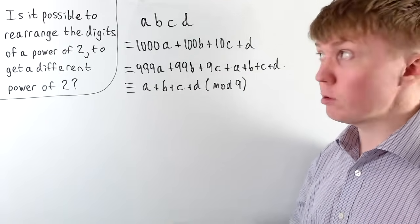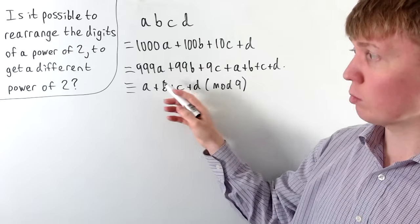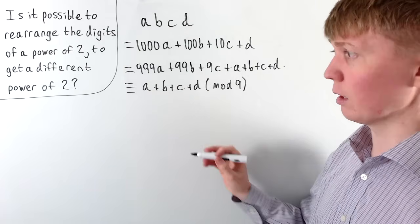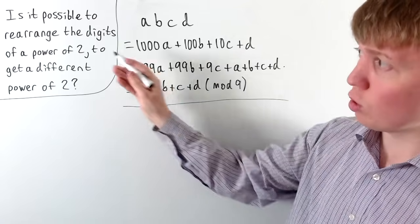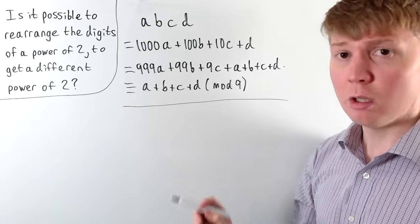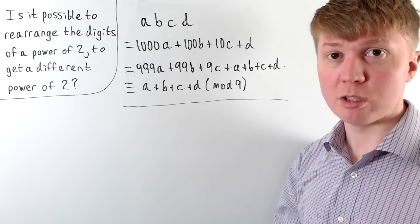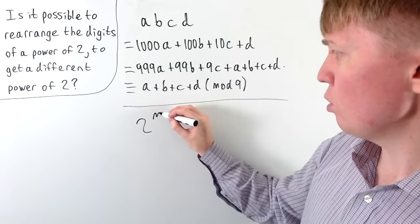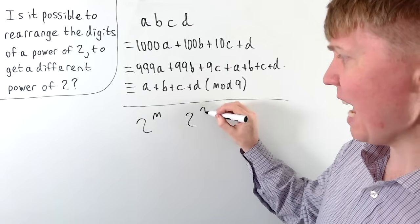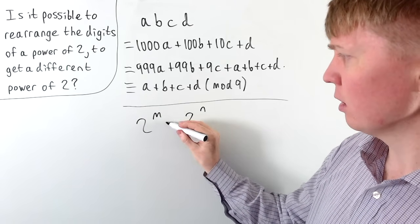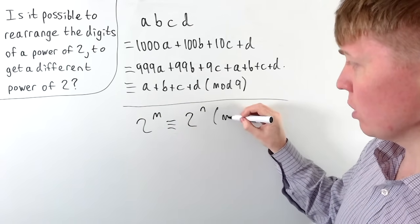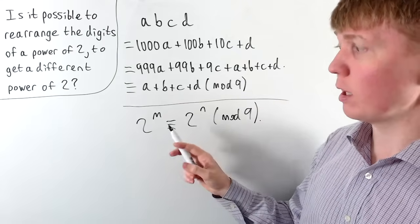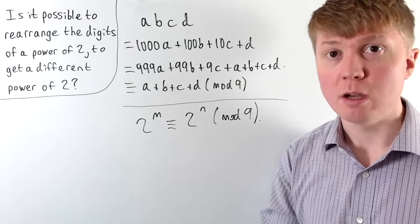Similarly, if we permute the digits, the number is still equivalent to its digit sum modulo 9. So if we had two powers of 2 — call them 2^m and 2^n — where one is a rearrangement of the other's digits, they would have to be equivalent to each other modulo 9.